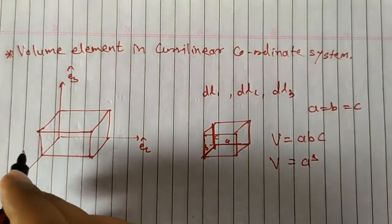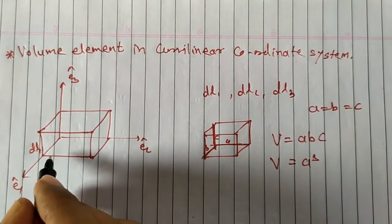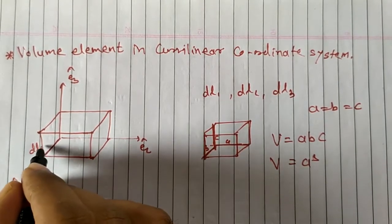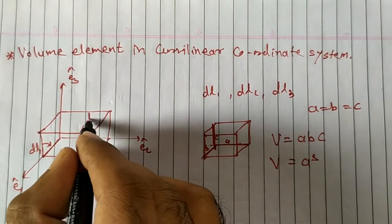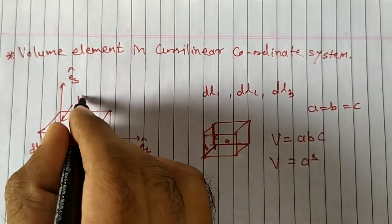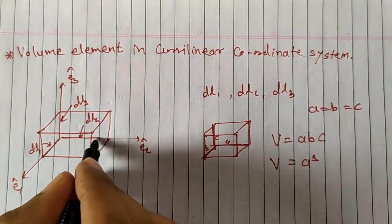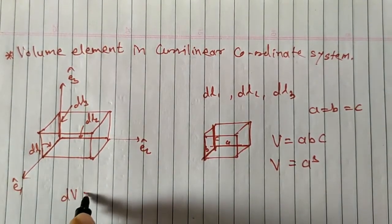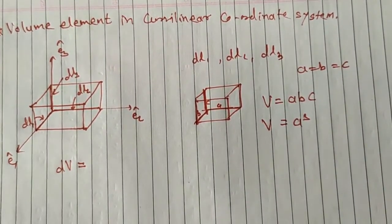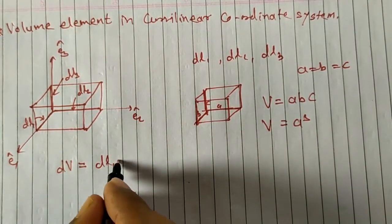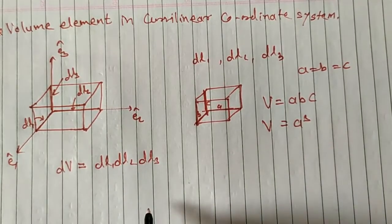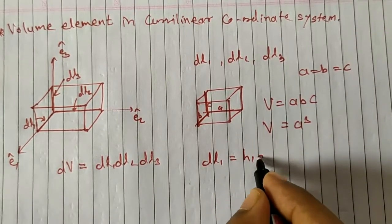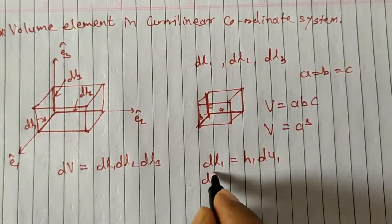Similarly, here we have sides dL1, dL2, and dL3. The volume element dv can be written as the product dL1·dL2·dL3. From the last lecture, dL1 = h1·du1, dL2 = h2·du2, and dL3 = h3·du3.